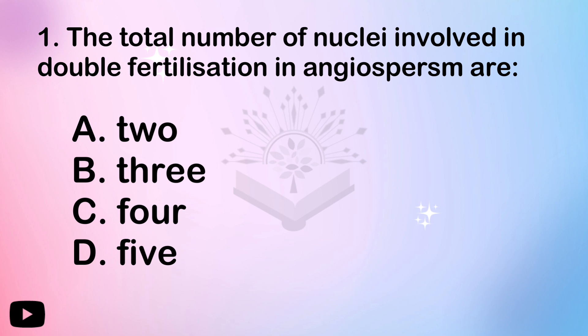The central polar nuclei fuse with the male gamete — that's one nucleus. Then there are three, four. There are two synergids — that makes five nuclei in total.